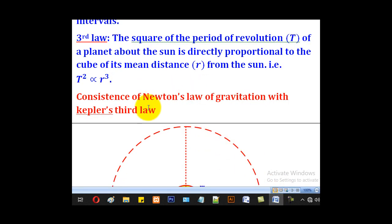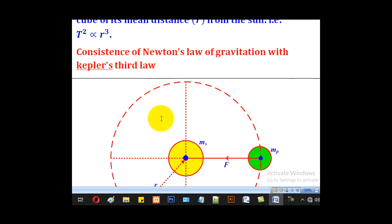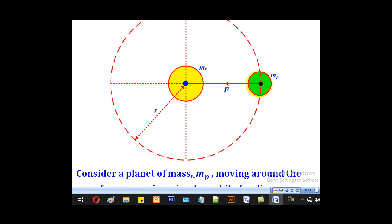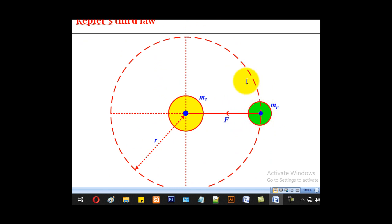That takes us to the consistency of Newton's law of gravitation with Kepler's third law. As this planet is moving around the sun, there should be a force that is pulling it towards the center. That is called centripetal force.